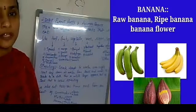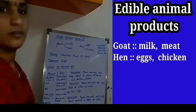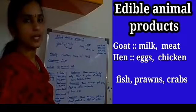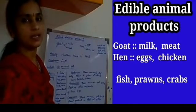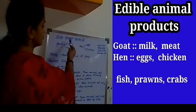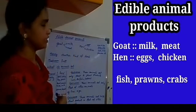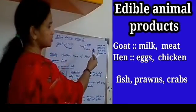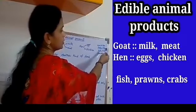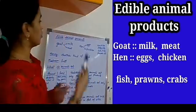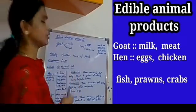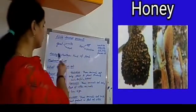Next we shall see the edible animal products. We have seen edible plant parts; now edible animal products. We get milk, meat, and eggs from goat and chicken. Seafoods like fish, crabs, prawns, etc. All these are edible animal products we eat in our day-to-day life. The next kind of food is honey.